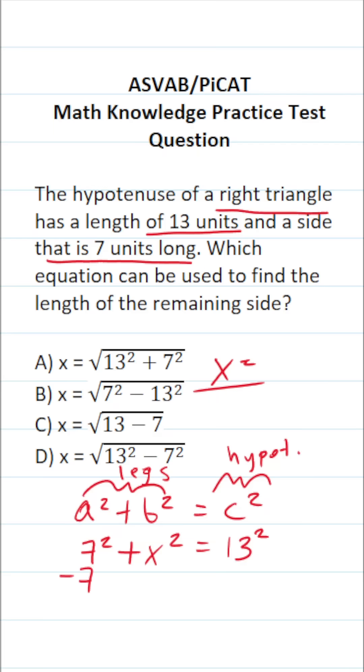The first thing we're going to do is subtract 7 squared from both sides, of course. In doing so, this crosses out, leaving us with x squared equals 13 squared minus 7 squared.